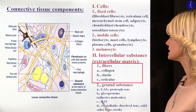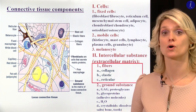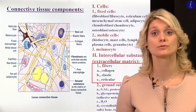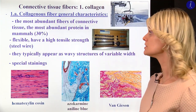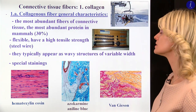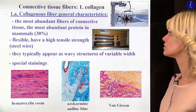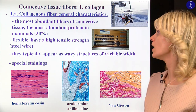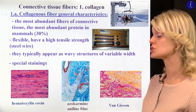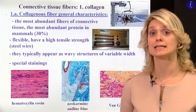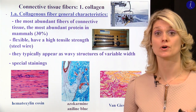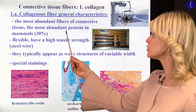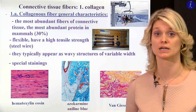Let's see now the fibers first: the collagen fibers, the elastic fibers, and the reticular fibers. The first are the collagen fibers — the most abundant fibers of the connective tissue, forming 30% of the whole protein content of the body.